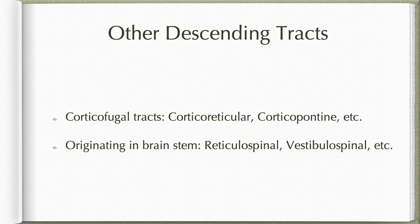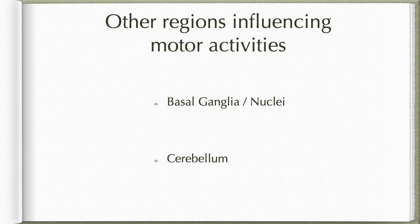The surrounding descending tracts include corticofugal tracts like cortico-reticular, corticopontine, and corticorubral, as well as tracts originating in the brain stem such as reticulospinal, vestibulospinal, rubrospinal, and olivospinal tracts. In addition to these descending tracts, two other regions influence motor activities: the basal ganglia (or basal nuclei) and the cerebellum.